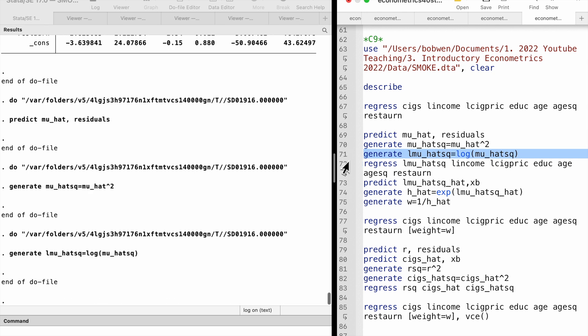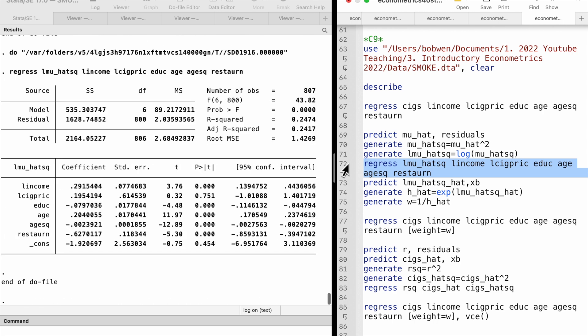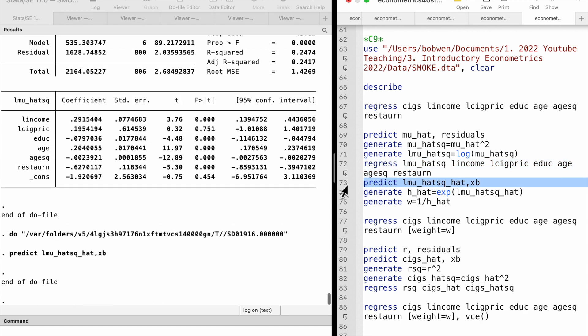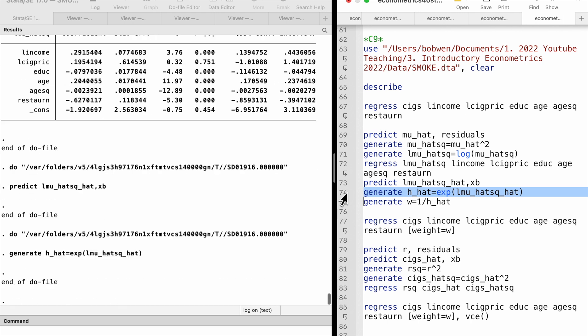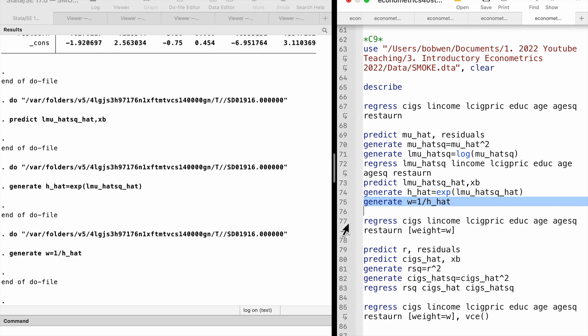The next step is to run the regression of the log squared residuals on all the explanatory variables. After that, we obtain the fitted values and generate h-hat by exponentiating the fitted values. Finally, we generate the weights equal to 1 over h-hat.